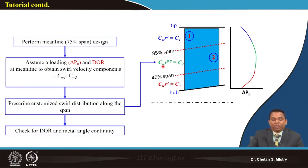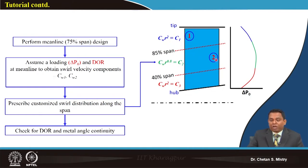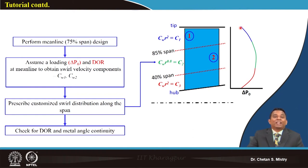To simplify, we divide the blade span into three regions: hub to 40 percent span, 40 to 85 percent span, and above 85 percent span. From hub to 40 percent span and from 85 percent to tip, we apply Cw·r² = constant (n=2, offloaded). From 40 to 85 percent span (mid-span), we apply Cw·r^0.8 = constant for higher loading to compensate.